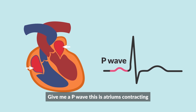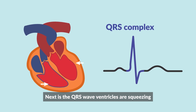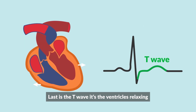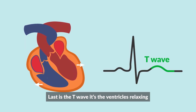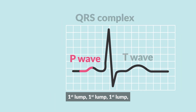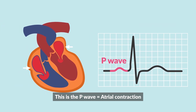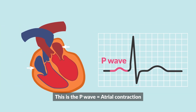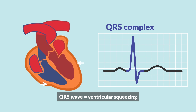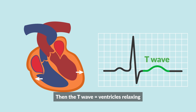Give me a P wave — this is the atriums contracting. Next is the QRS, the ventricles are squeezing. Last is the T wave, the ventricles relaxing. This is your easy EKG interpretation. First lump — this is the P wave, atrium contracting. QRS wave, ventricular squeezing. Then the T wave, ventricles relaxing.